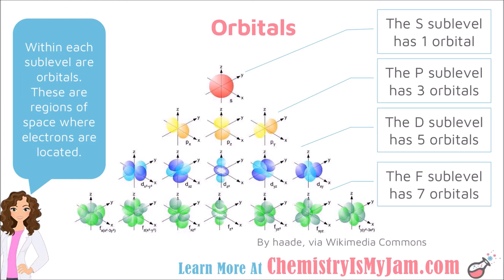This diagram shows the different types of orbitals present within the sublevels. The S sublevel has one orbital with a spherical shape. The P sublevel has three orbitals with a barbell shape, and if you look at them on a three-dimensional axis, one falls along the X axis, one along the Y, and one along the Z. The D sublevel has five orbitals and the F sublevel has seven orbitals, with increasingly complex shapes. The shapes get more complicated as you go from S, P, D down to F.